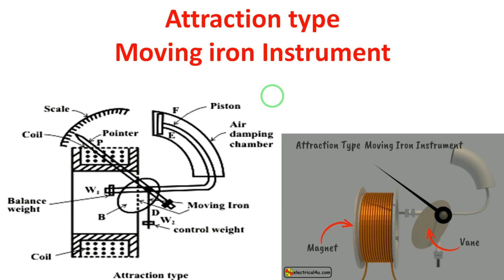These are the important and easy topics. If you understand the construction and diagram, you can link it to the working operation. Attraction type: the coil creates a magnetic field, the moving iron piece is attracted, and the pointer moves. We also need two additional torques: gravity control torque and air friction damping torque. This completes the Attraction Type Moving Iron Instrument. In the next class, I will discuss the Repulsion Type Moving Iron Instrument.